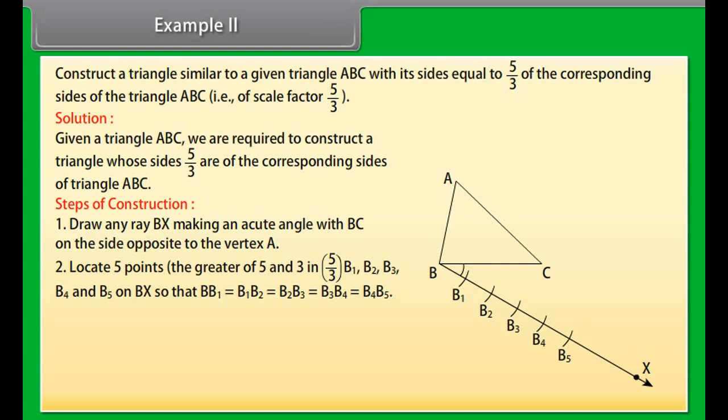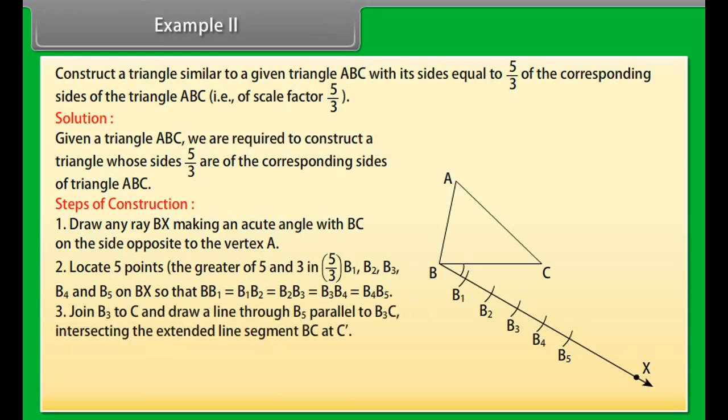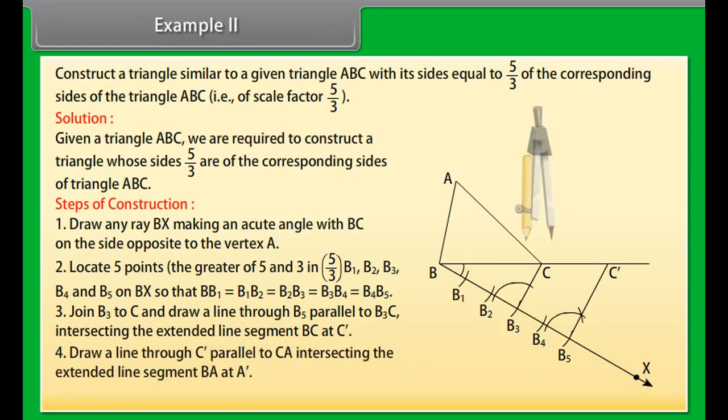Steps of construction: Draw any ray BX making an acute angle with BC on the side opposite to the vertex A. Locate 5 points, the greater of 5 and 3 in 5 by 3, B1, B2, B3, B4 and B5 on BX so that BB1 equals B1B2 equals B2B3 equals B3B4 equals B4B5.